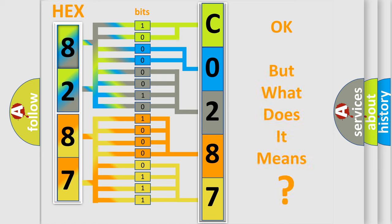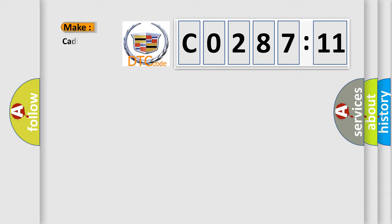The number itself does not make sense to us if we cannot assign information about what it actually expresses. So, what does the diagnostic trouble code C0287:11 interpret specifically for Cadillac car manufacturers?